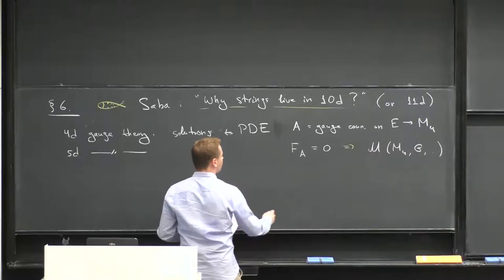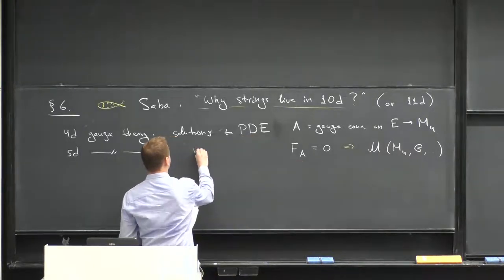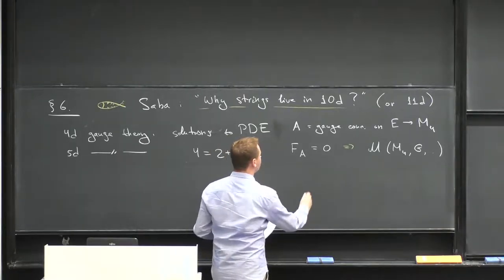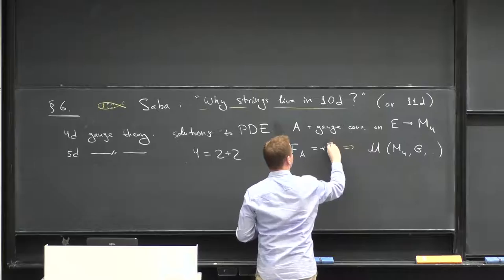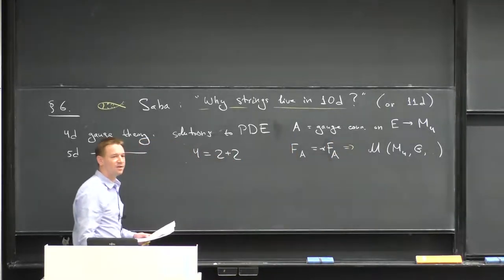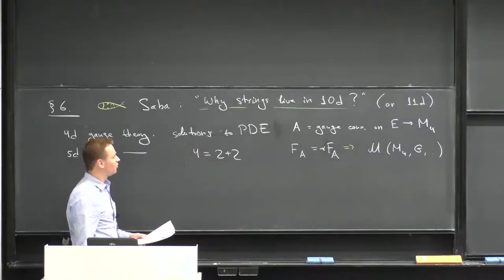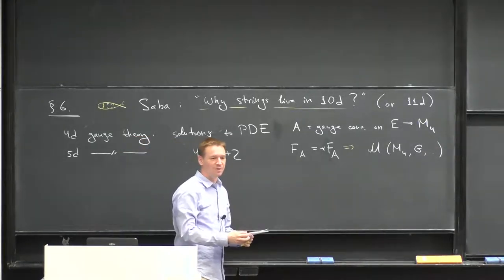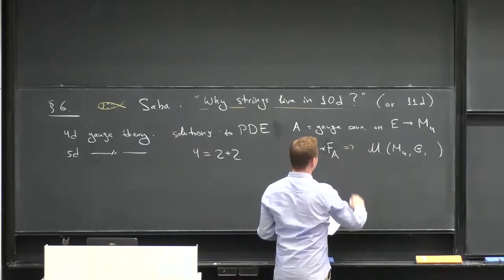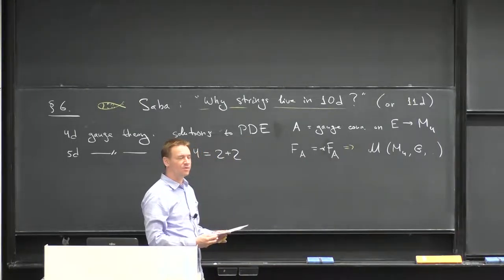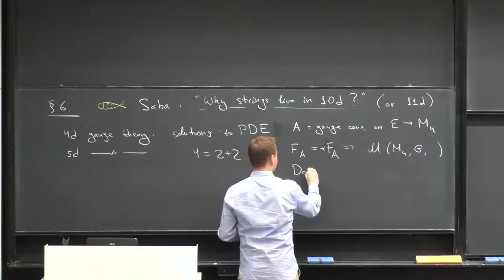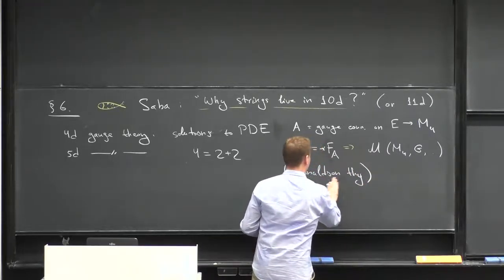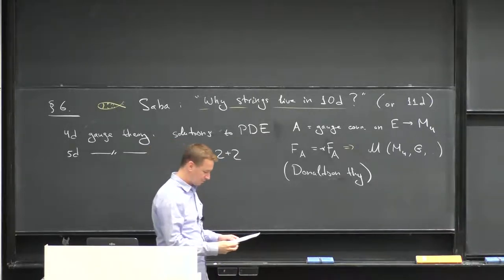In four dimensions, something special happens. In particular, curvature is a two-form, and 4 is 2 plus 2. Therefore you can ask: the Hodge-star of F is also a two-form, and you can modify the equation by asking the curvature to equal its Hodge-dual. That actually uses this 2 plus 2 equals 4 formula — a very deep equation. This leads to a more interesting PDE: still a first-order partial differential equation in four dimensions, and that's the one usually studied in the context of Donaldson theory.